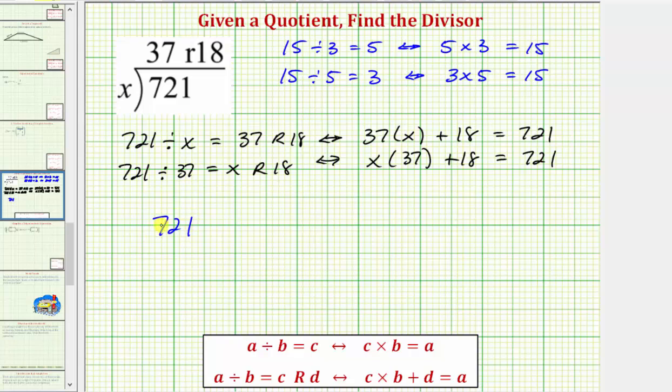So we'd have 721 divided by 37. Well there's one 37 in 72. One times 37 is 37. Subtracting here, the difference is 35.